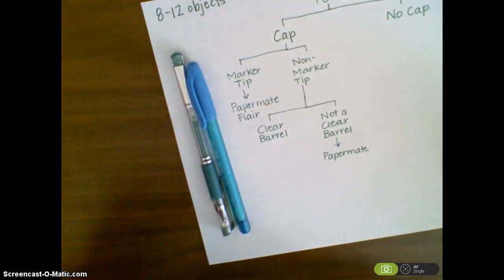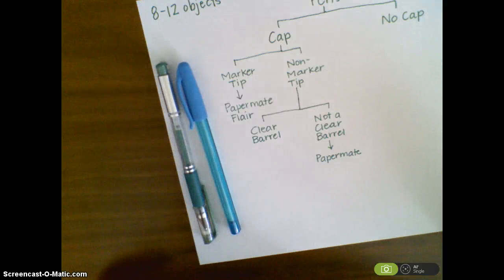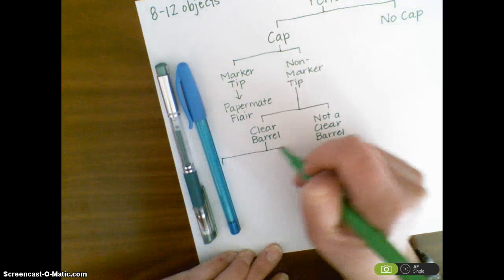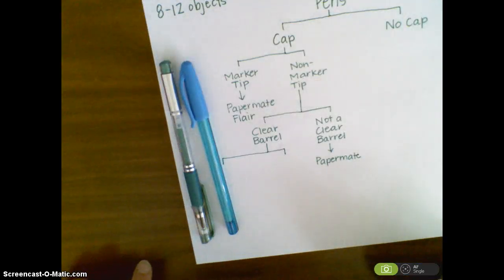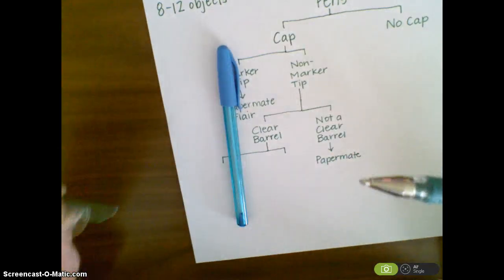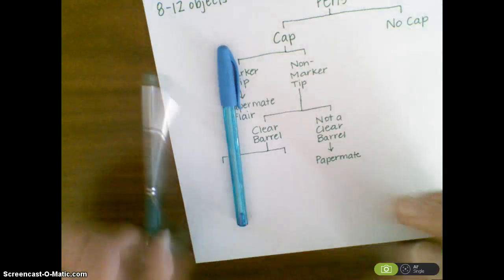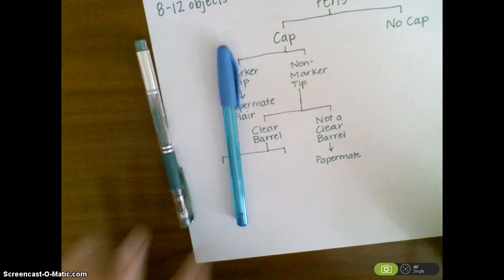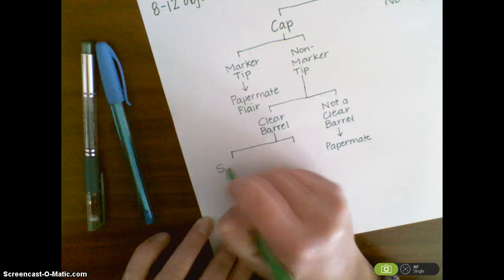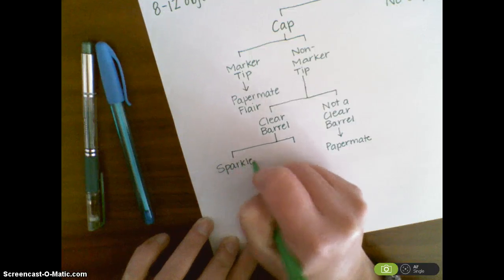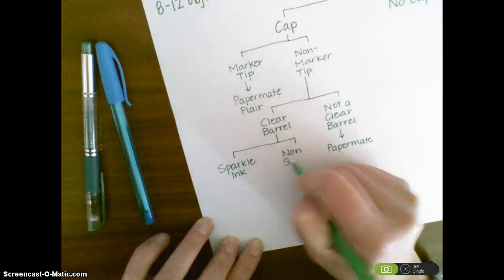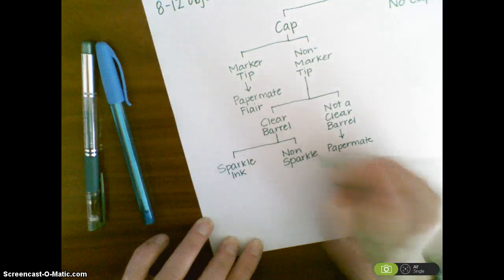That pen is sorted, so I'm going to set it aside. Now I'm down to two pens with clear barrels. I need to look at those and decide how to divide them into two groups. One of these pens has sparkle ink, so I'm going to sort them into 'sparkle ink' and 'non-sparkle ink.' There are my two groups again.